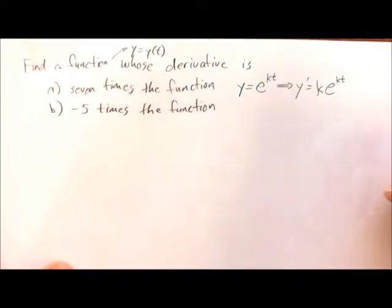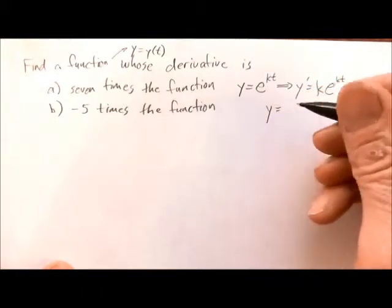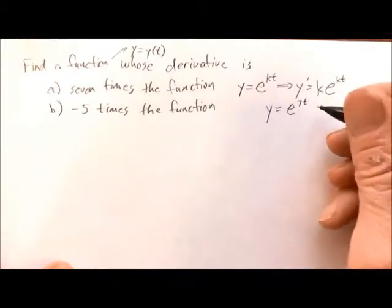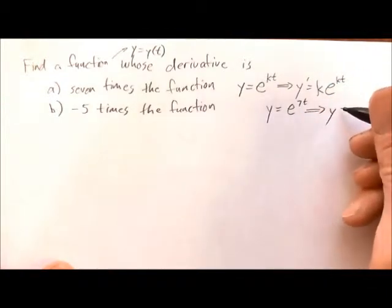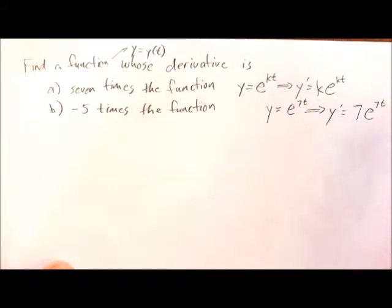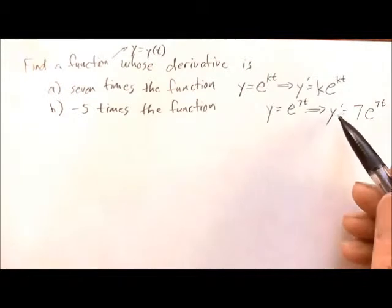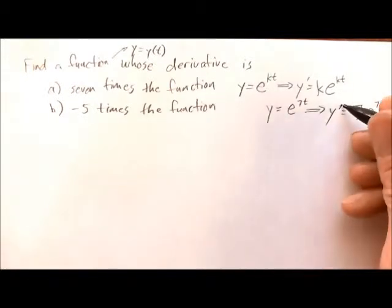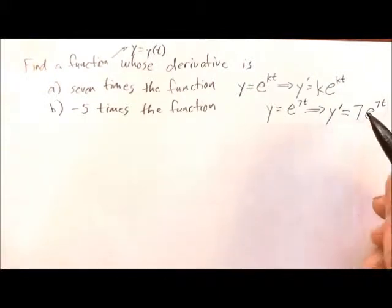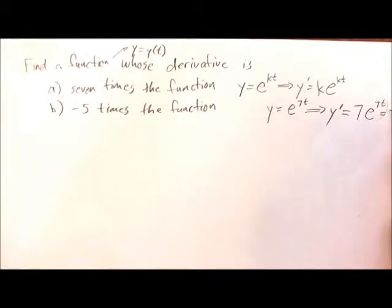So for part A, if we guess that y equals e to the 7t, then when we take the derivative, y prime will be e to the 7t, and by the chain rule, taking the derivative of 7t gives an extra factor of 7. So the derivative is 7 times e to the 7t, which is y itself.